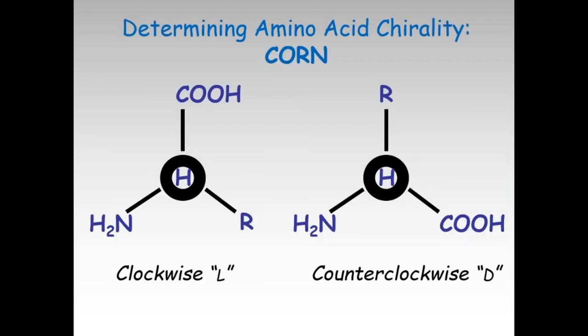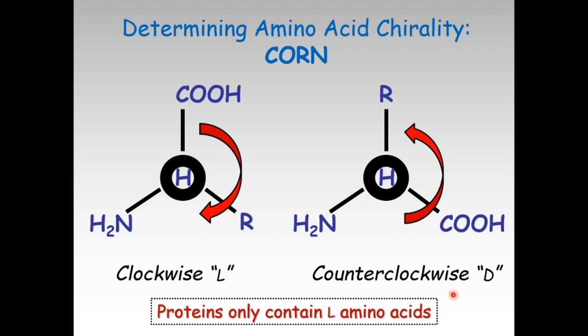How do you determine the amino acid chirality? That is by using a methodology called CORN. When you have an amino acid written like this and H is pointing down—not pointing towards you—you would use the abbreviation CORN, where CO comes from the carboxylate, R is the R group, and N is the amine group. If you go clockwise and it is CORN, it is an L amino acid, whereas if you go counterclockwise, it is a D amino acid. Most importantly, proteins only contain L amino acids.